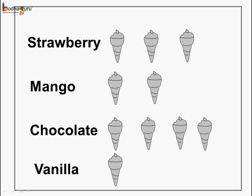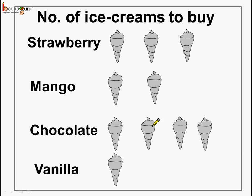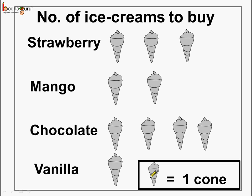Now in a pictograph, generally it has a title so that it becomes easier to understand. Like here we can add the title as 'number of ice creams to be bought,' so that it clearly shows how many ice creams we need to buy. At times we can also add a note at the bottom to show what the data represents — like here we could have written that one hand-drawn cone means one ice cream cone needs to be bought. So a pictograph is a way of representing data through the use of pictures, and it may have a title and a note to explain what the picture stands for.